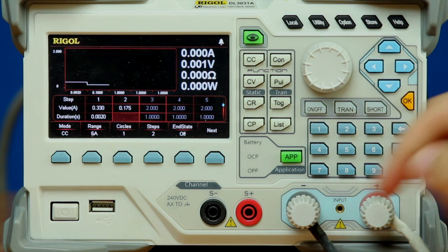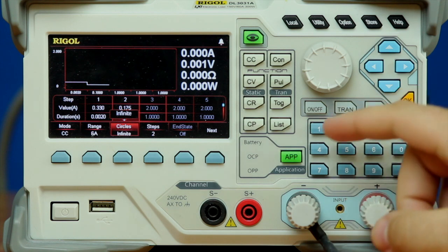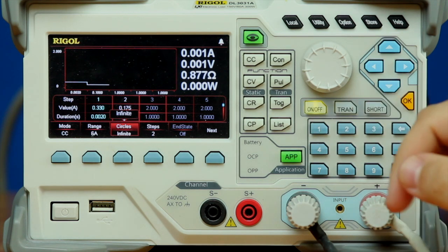And now that I've done this, I'm going to set our number of cycles to be infinite. And then in order to turn this on, I just have to press the on button here, and then to trigger it, I use the transient button.